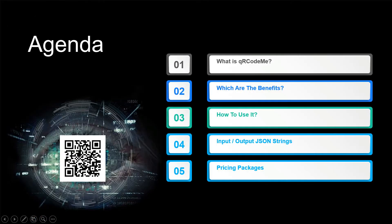Agenda. What is QR Code Me? Which are the benefits? How to use it? Input and output JSON strings. Pricing packages.